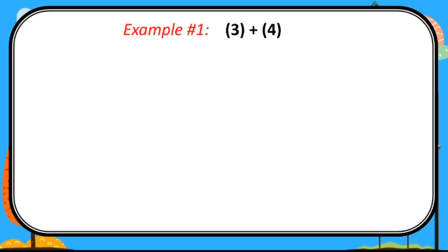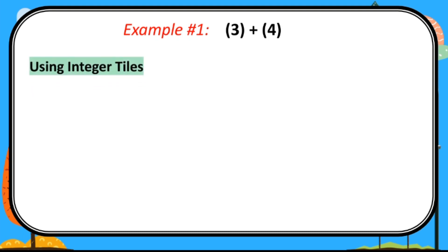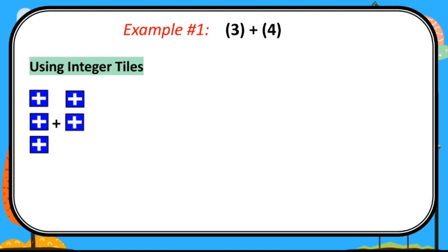Example number 1: positive 3 plus positive 4. As we can observe, they are both positive, so they have the same sign. Using integer tiles, we will use blue or positive tiles for our given. For positive 3, we have 1, 2, and 3, plus 1, 2, 3, and 4 positive tiles. So positive 3 plus positive 4 equals positive 7.